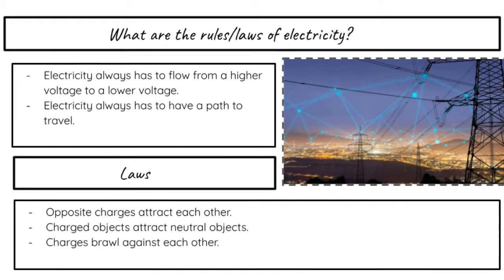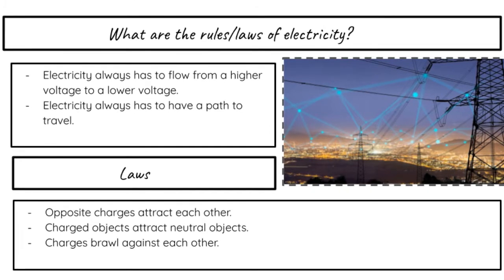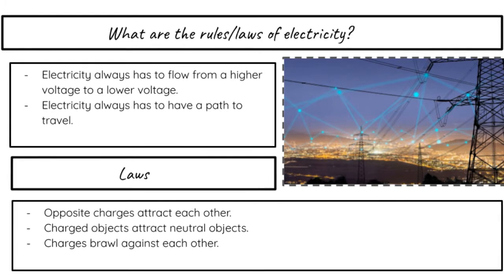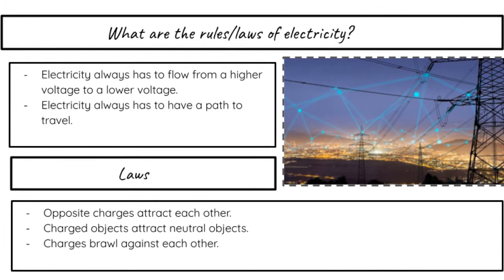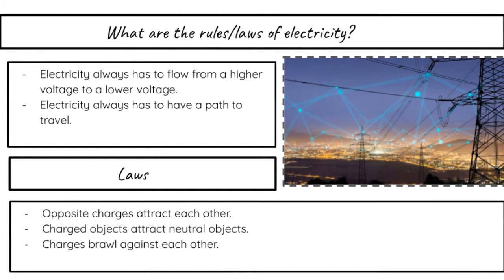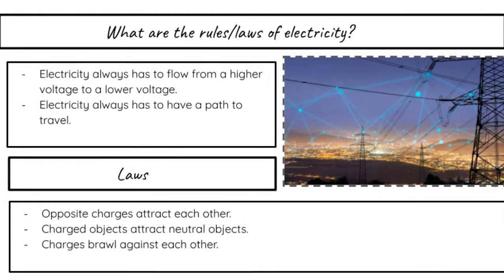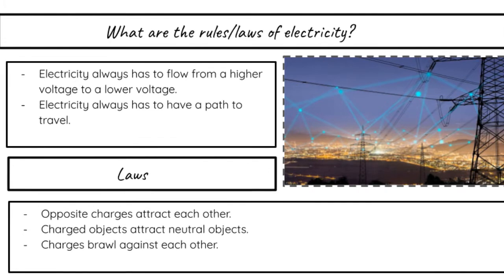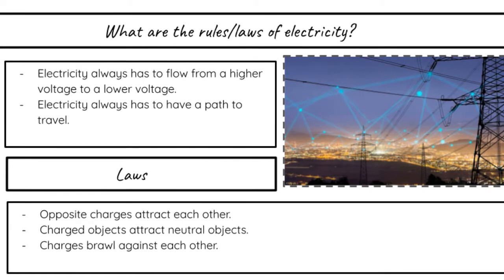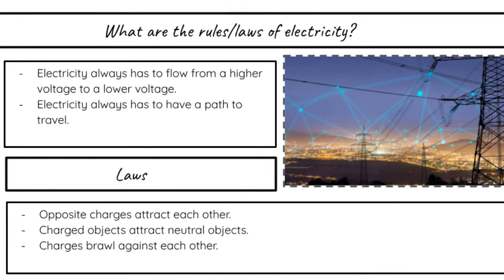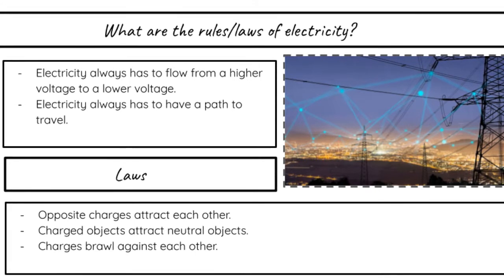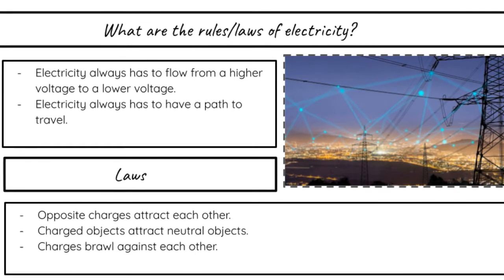Now that you know the basic facts of electricity, let's learn about the rules and laws of electricity. The rules are: electricity always has to flow from a higher voltage to a lower voltage. Electricity always has to have a path to travel. Some laws are: opposite charges attract each other. Charged objects attract neutral objects. And lastly, like charges repel each other.